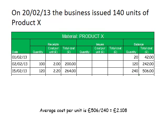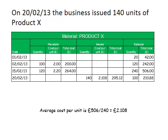We can now complete the stock card for this transaction. On the 20th of February we have 140 units being issued with an associated cost per unit of £2.108 and a total cost of £295.12. The balance of our stock now falls to 100 units with an associated cost of £210.88, calculated by taking the £506 we had before and deducting the £295.12 associated with the issue of these 140 units.